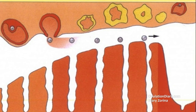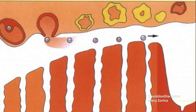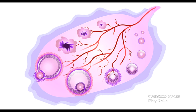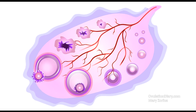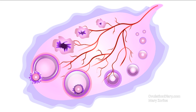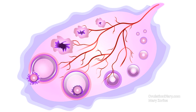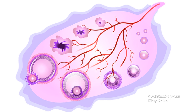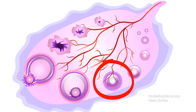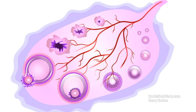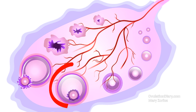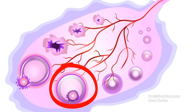Folliculogenesis — preparation for ovulation. There is a step-by-step maturation of follicles, the structural components of the ovaries — special epithelial cocoons with immature eggs. In the classical situation, the stage ends on the 7th–8th day of the cycle with the release of one dominant follicle, more rarely several. It contains the egg ready for fertilization. The dominant follicle matures in the ovary to 18–24 mm during the follicular phase of the cycle.